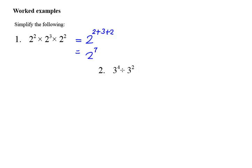Example 2. It is often far easier to write these as a fraction. So 3 to the power of 4 over 3 squared. I am dividing, so I'm going to subtract exponents. My bases are the same. 4 minus 2 equals 3 squared, which equals 9.